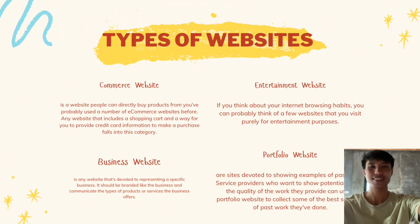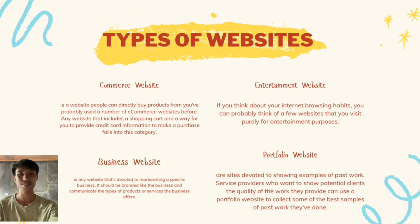Types of Websites. The first one is the e-commerce website — a website where people can directly buy products. You've probably used a number of e-commerce websites before. Any website that includes a shopping cart and a way to provide credit card information to make a purchase falls into this category. Examples are Amazon, eBay, and Alibaba.